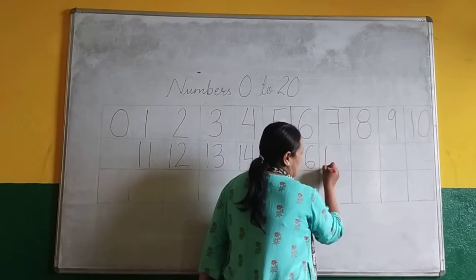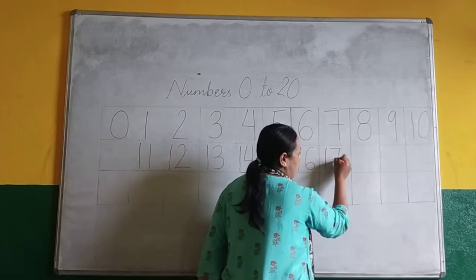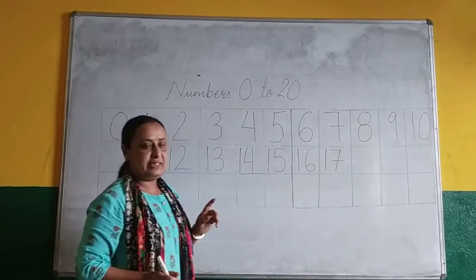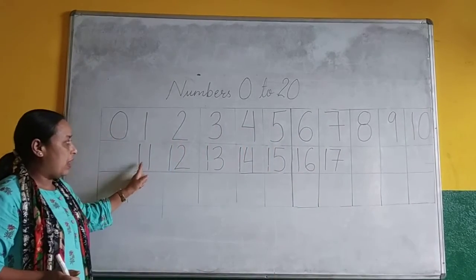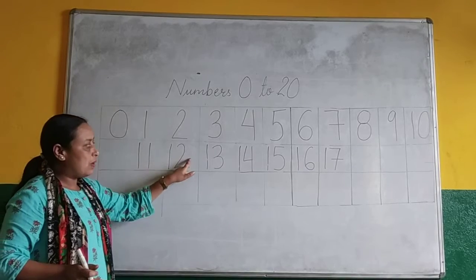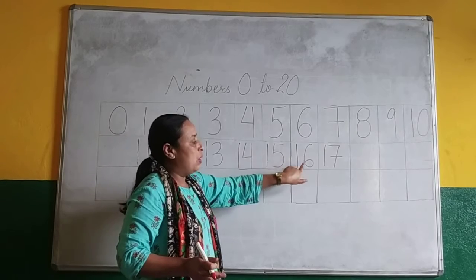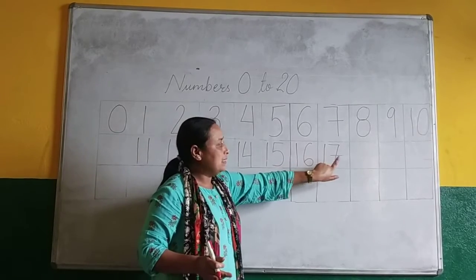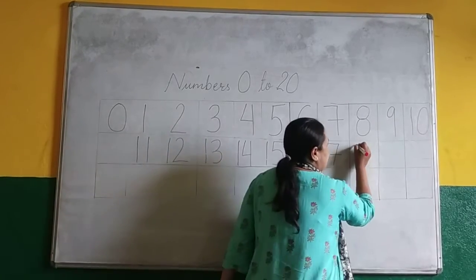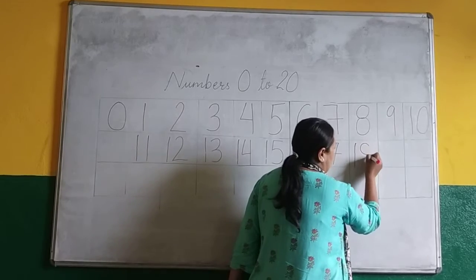1, 11, 1 to 12, 1, 3, 13, 1, 4, 14, 1, 5, 15, 1, 6, 16. 1, 7, 17. 1, 7, 17. Don't say 17. Again you count from here. 1, 11, 1 to 12, 1 to 13, 1, 4, 14, 1, 5, 15, 1, 6, 16, 1, 7, 17, 1, 8, 18. 1, 8, 18.